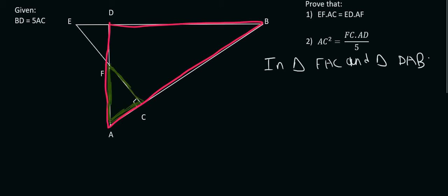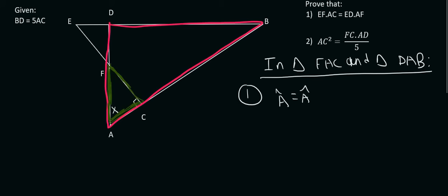As always, we should specify what triangles we're going to work in. We're working in triangle FAC and triangle DAB — the order doesn't matter yet, I'm just letting the teacher know which triangles I'm working in. Now we need to find three things. We can clearly see that the pink triangle and the green triangle make use of common angle A, so we can say that angle A is equal to angle A. Why? Because it's common.